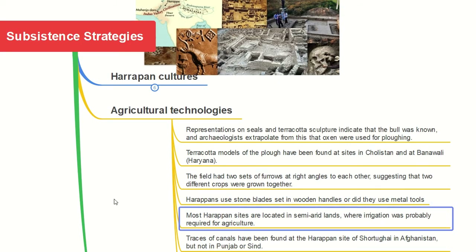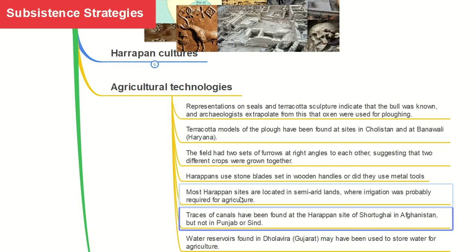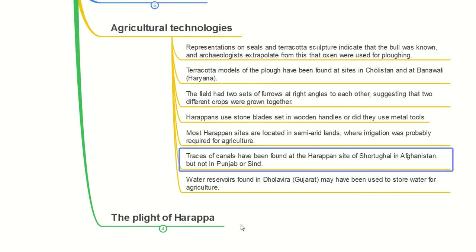Most Harappan sites are located in semi-arid lands — not completely dry, not completely fertile — where irrigation was possibly required for agriculture. A continuous supply of water from a river, lake, or pond would have been needed. Traces of canals have been found at the Harappan site of Shortugai in Afghanistan, but not in the Punjab or Sindh region, as the Indus river branches already flow there.